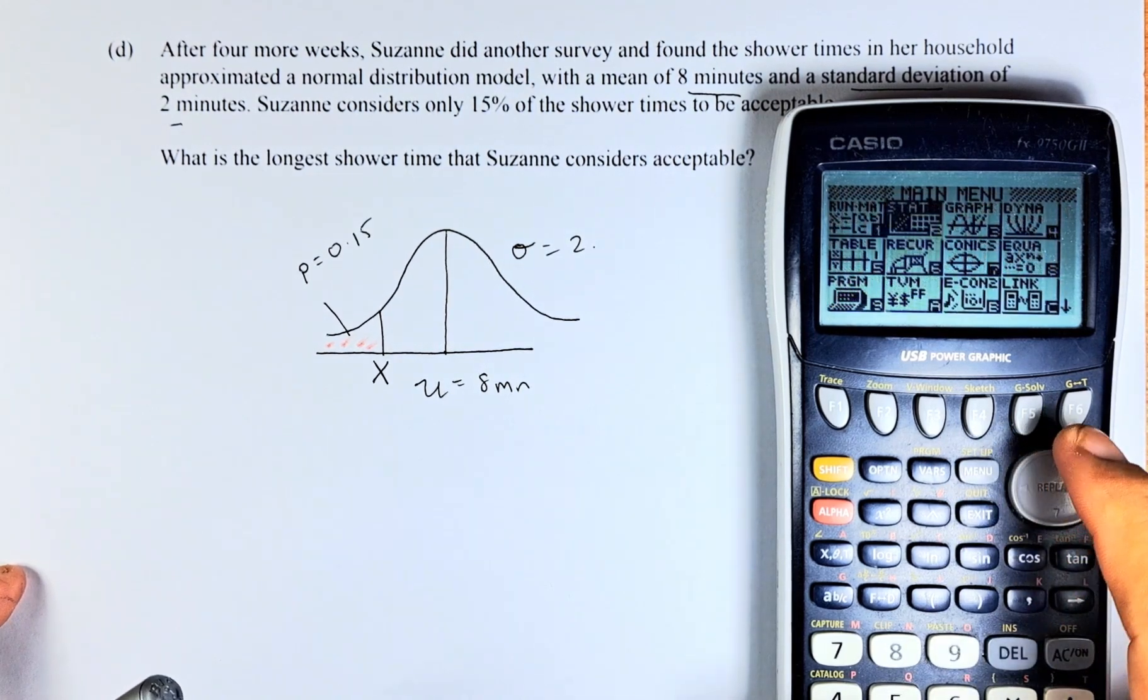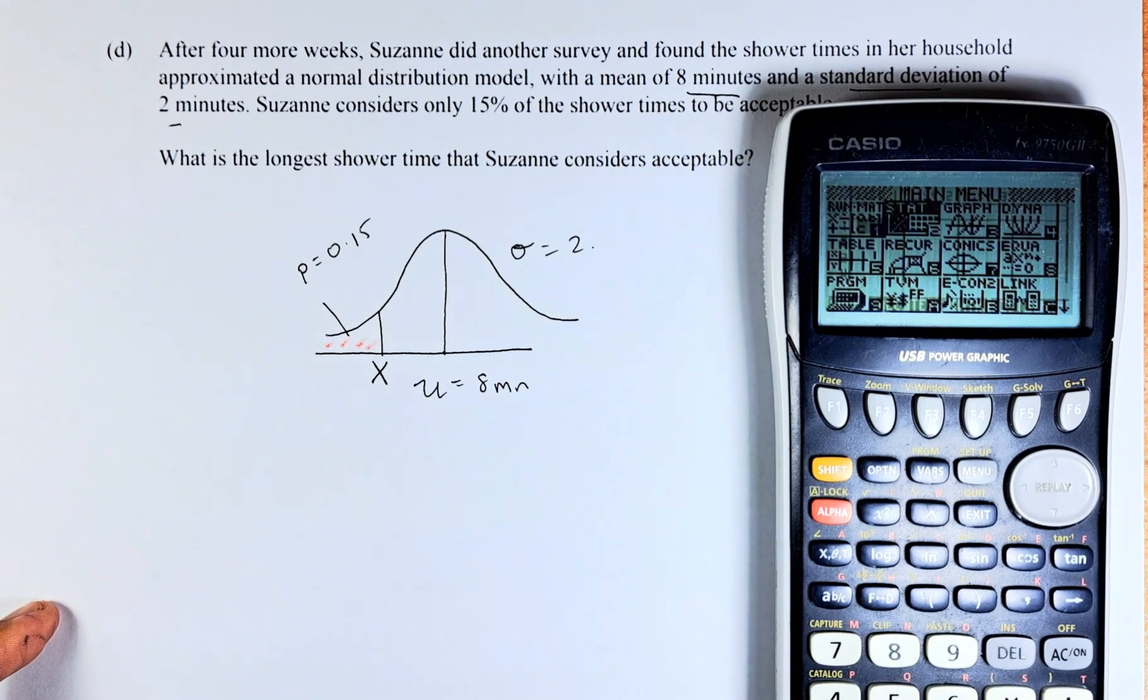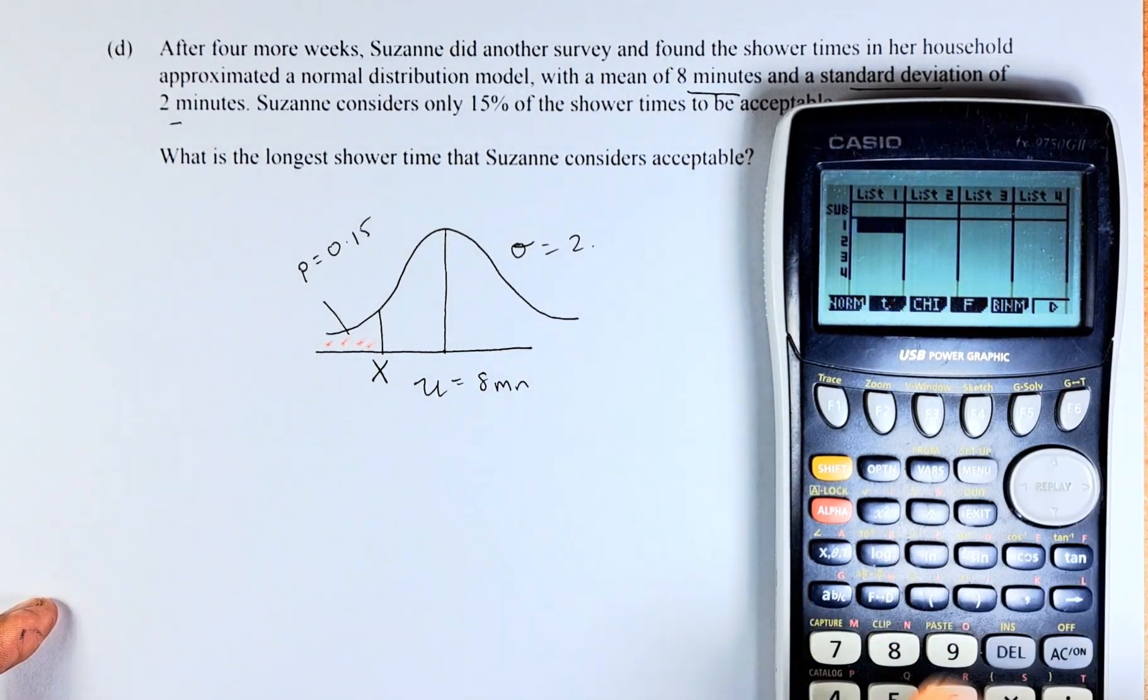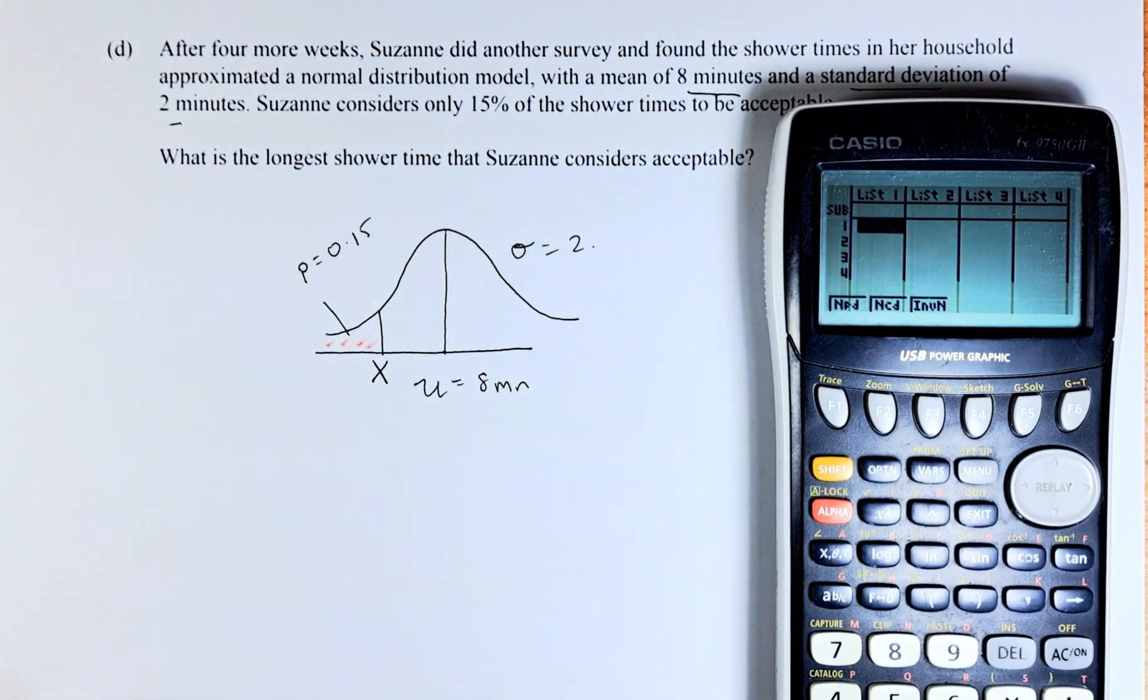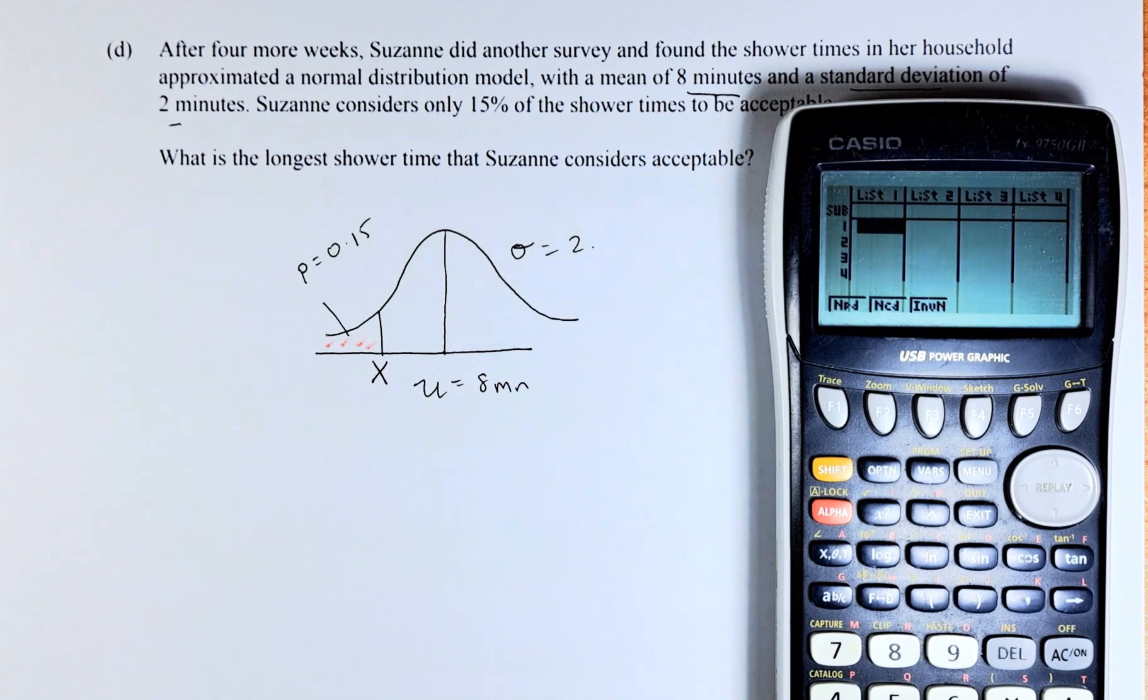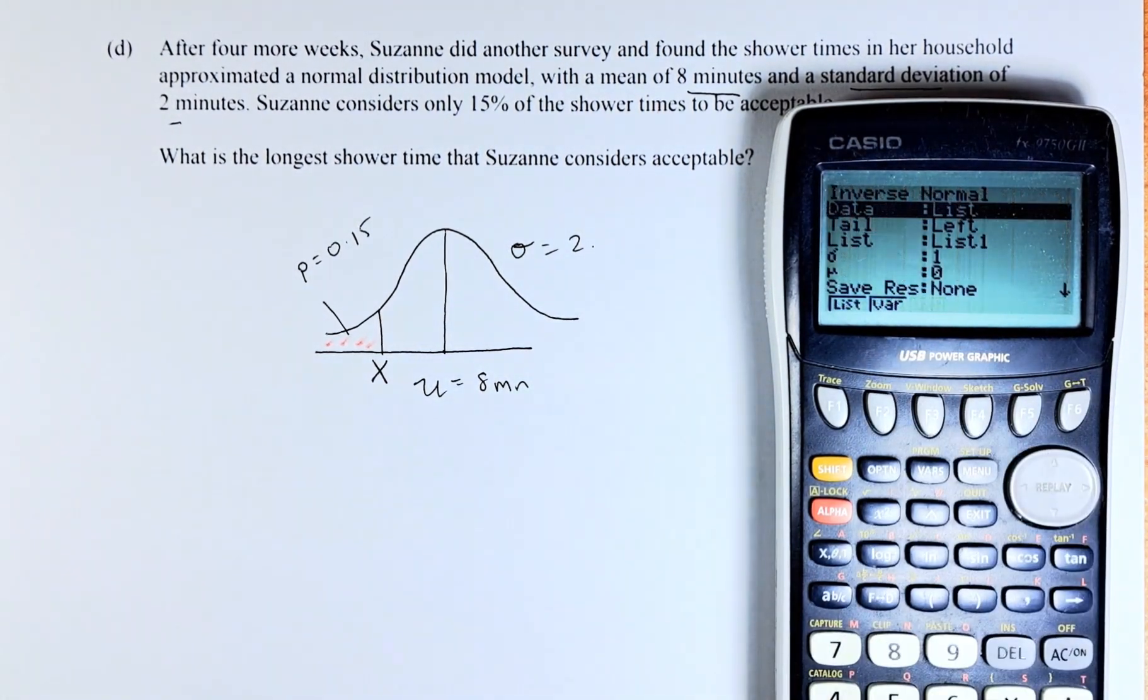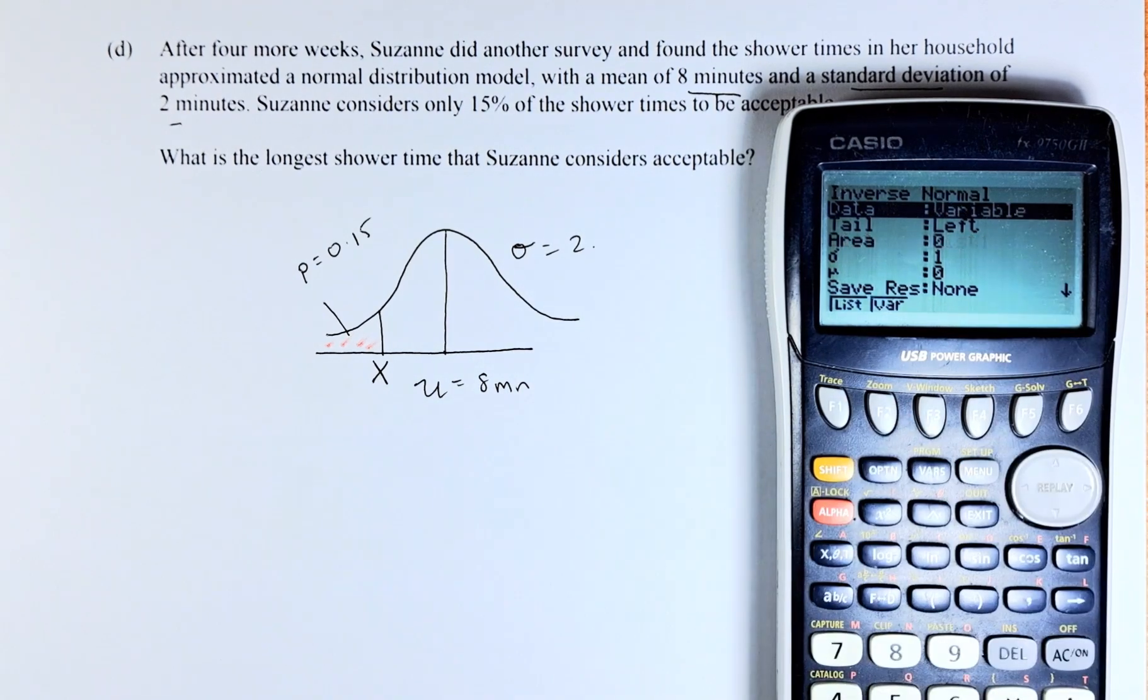We are going to start with statistics. Then we are going to go to distribution which is F5. Then we are going to go normal. Because this is an inverse normal, we have to put F3. Inverse normal F3, so press F3. Now we are ready to key in the data. Remember, always you have to go to variables, so put F2 now.